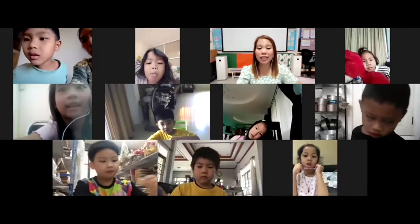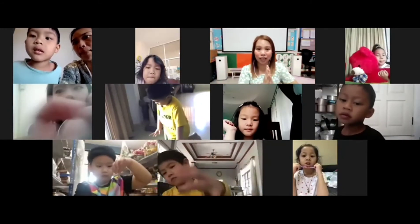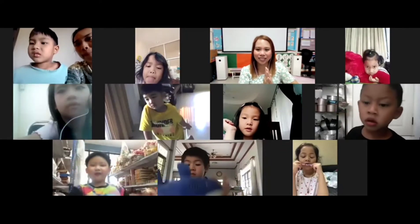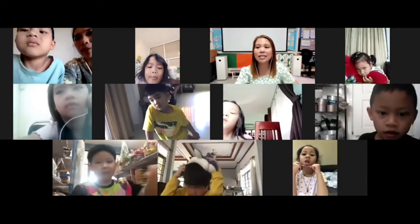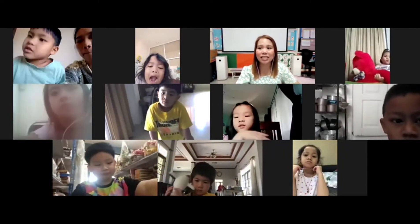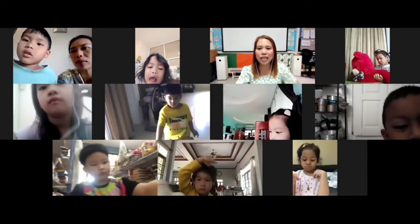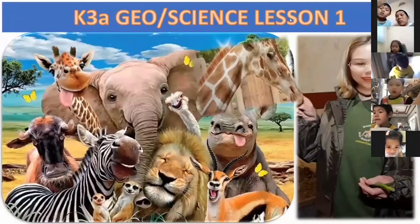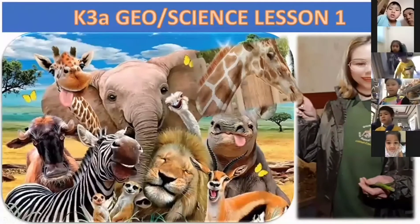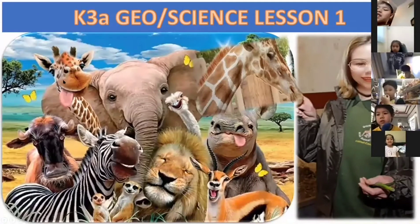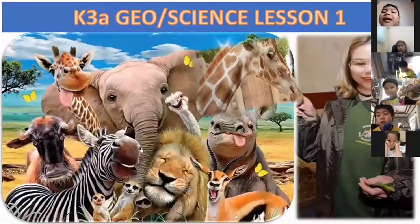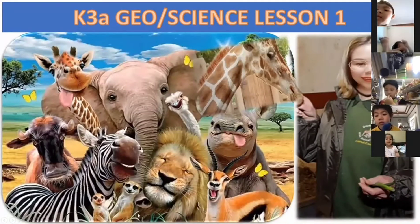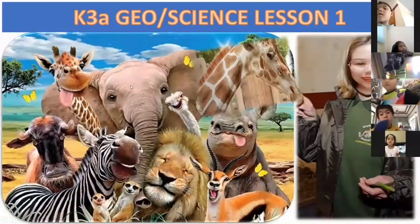Sometimes we can group animals that stay on land, in water, or both land and water together. Now let's look — we have the crab and the turtle. I will check if your friends can remember animals that stay in the water only. Do you see the picture? I have the giraffe, the elephant, the donkey, the zebra, the lion, the hippo, deer, and meerkats. Are they farm animals or are they wild?